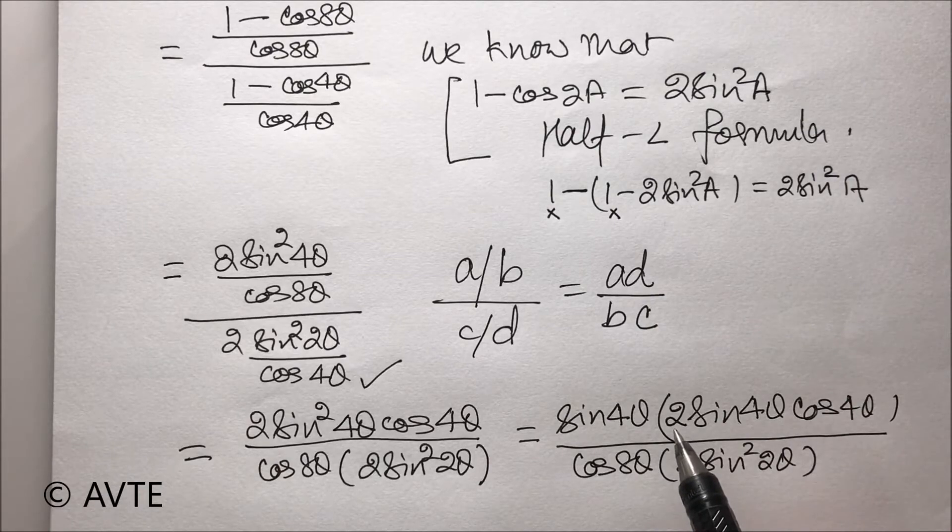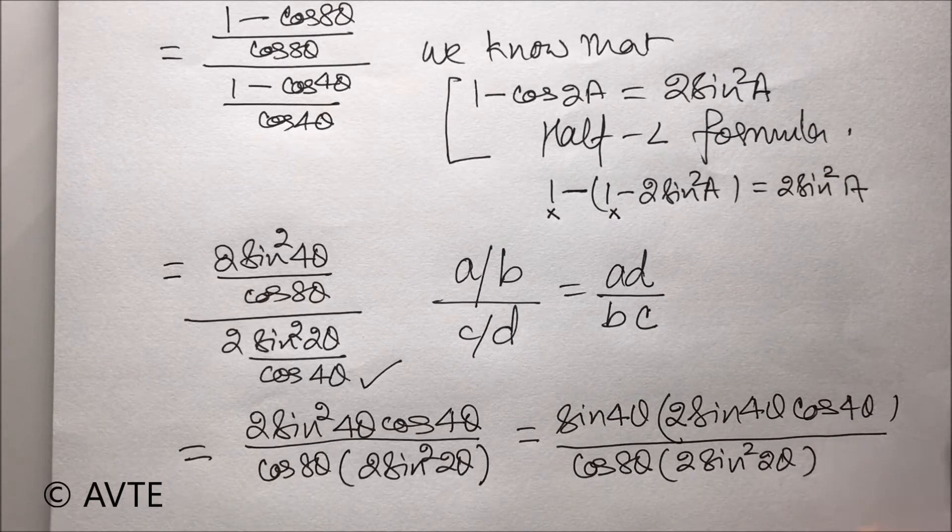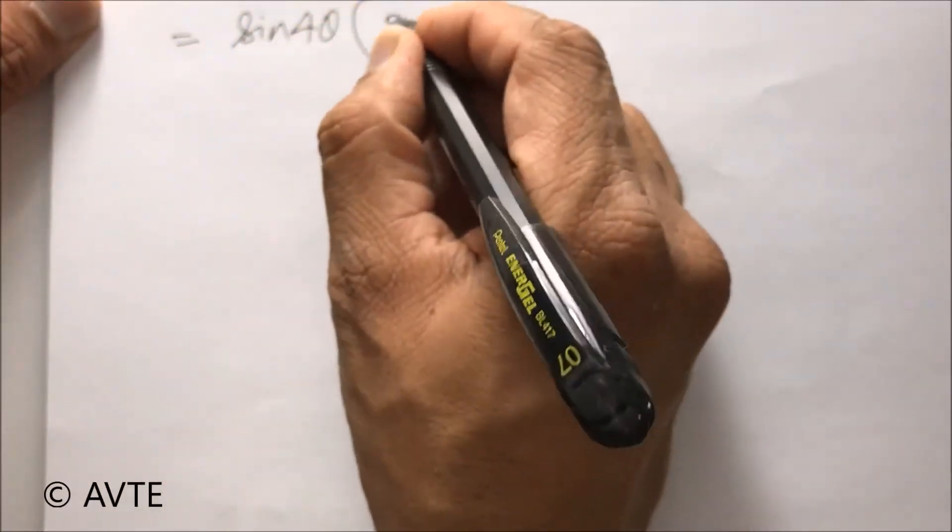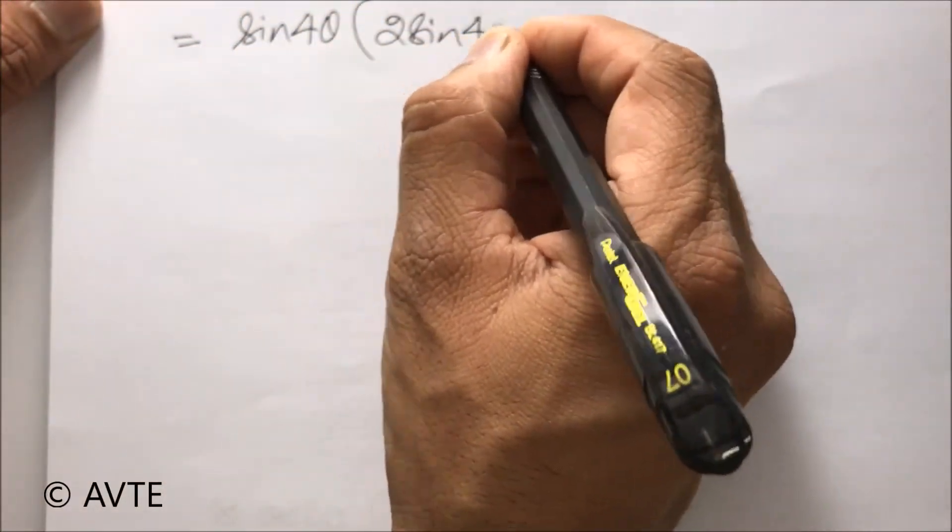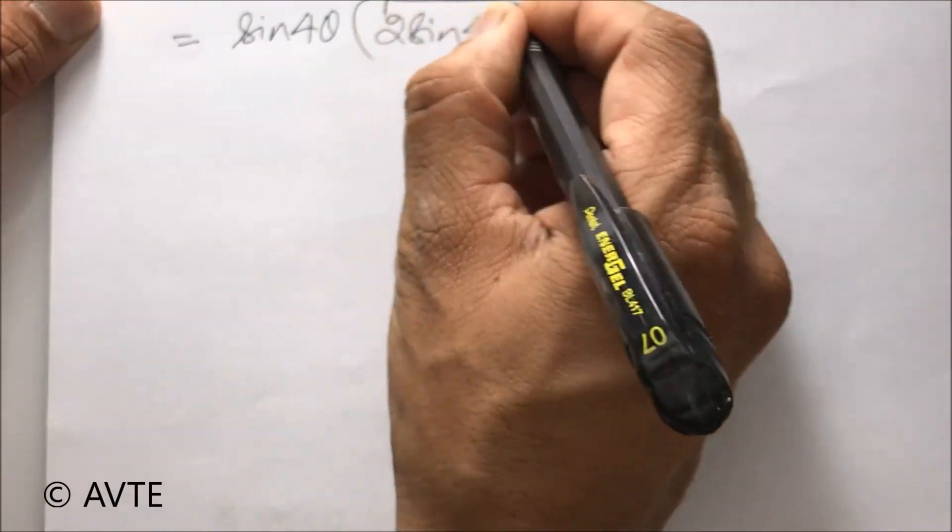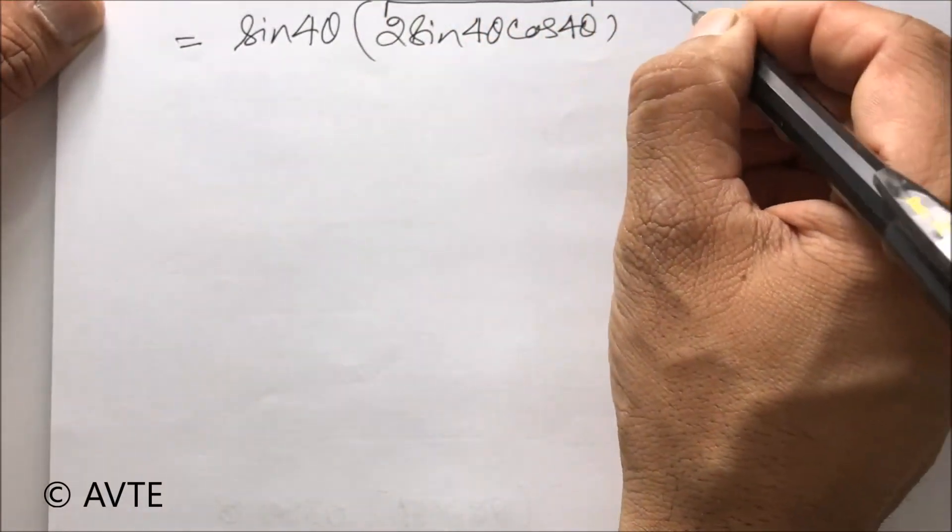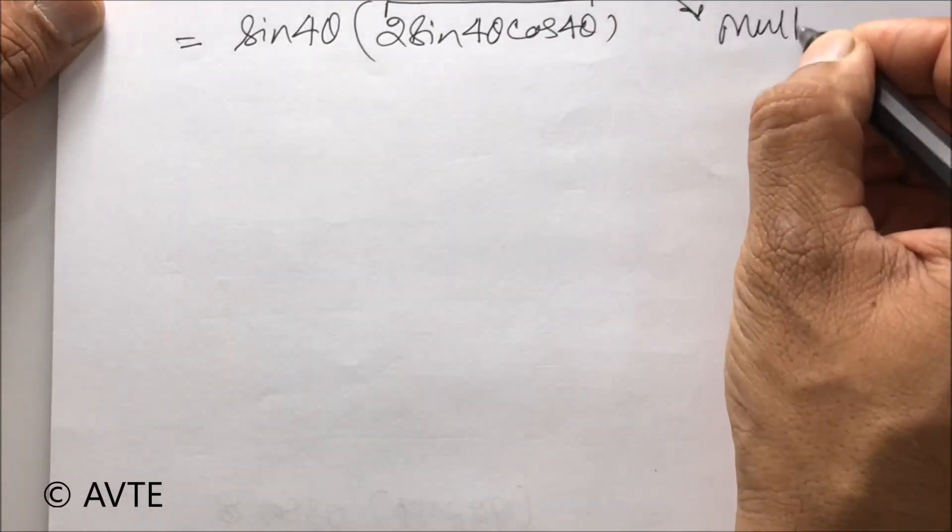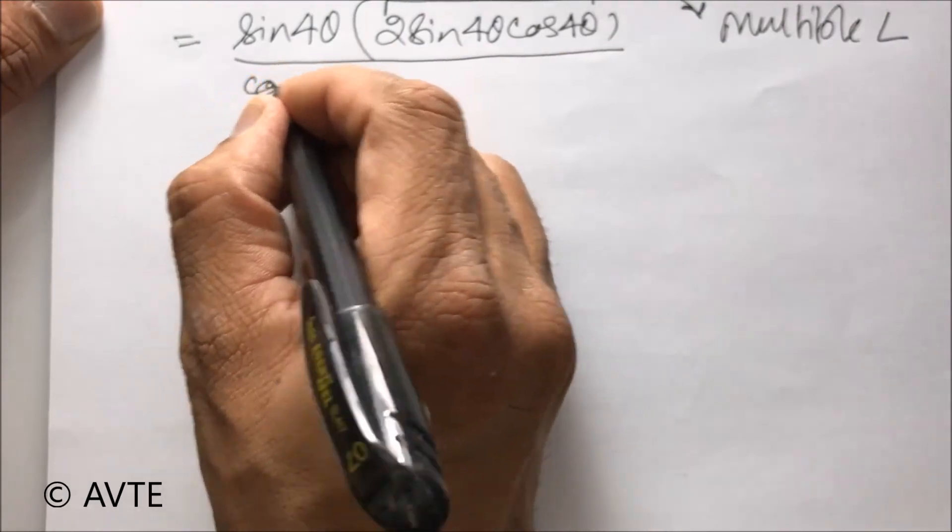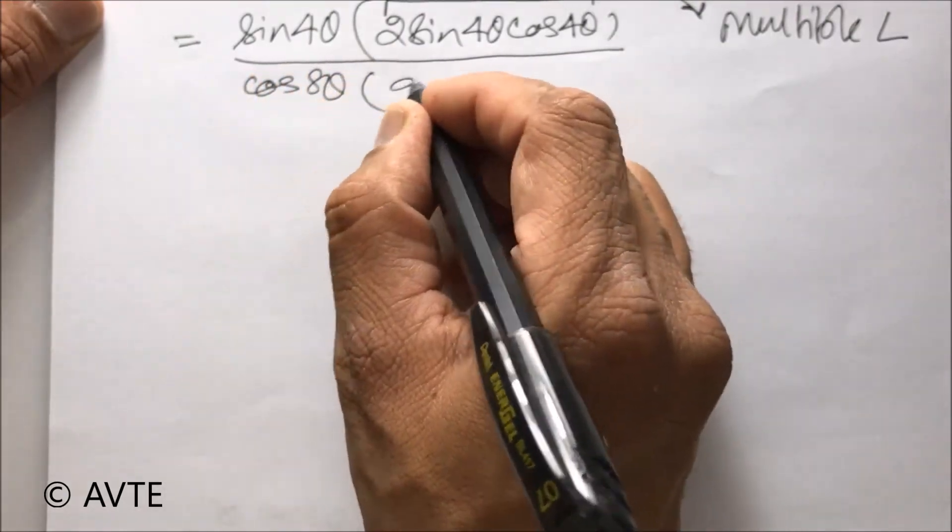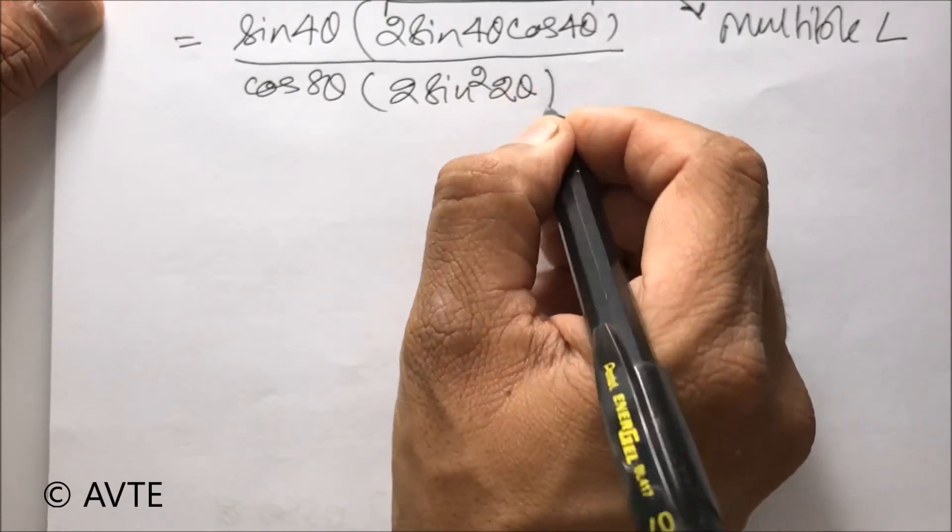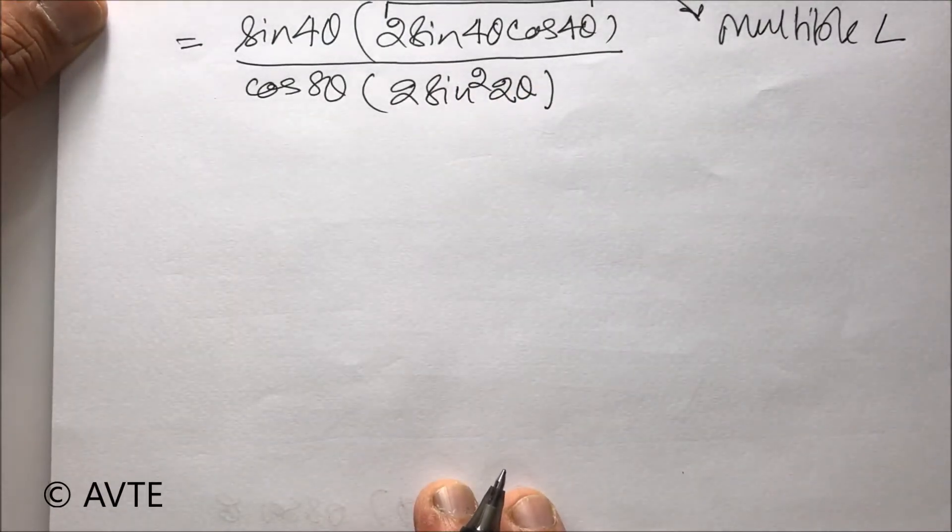That is possible when we write 2 sine theta cos theta. So, using that, this 2 sine 4 theta, cos 4 theta will turn to multiple angle. This will turn to multiple angle, divided by cos 8 theta is already waiting there. And this is 2 sine square 2 theta in the denominator.